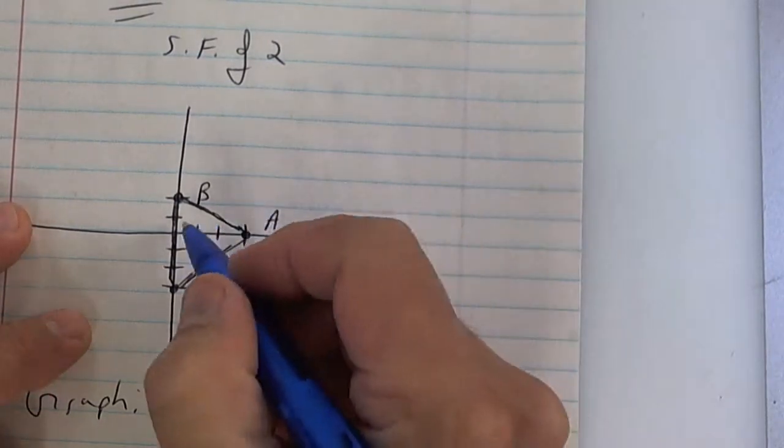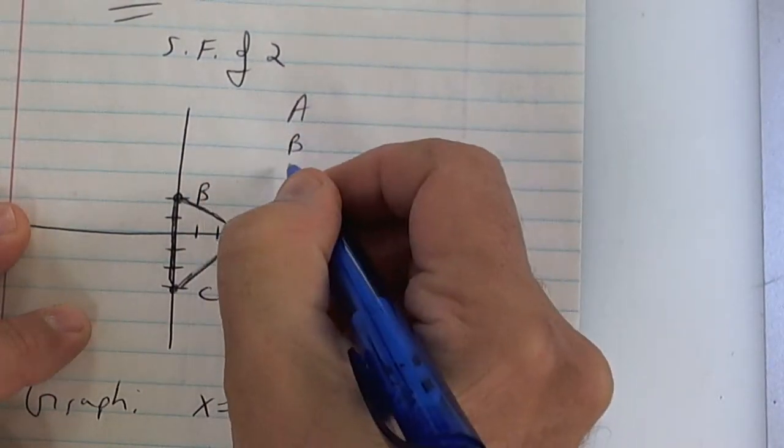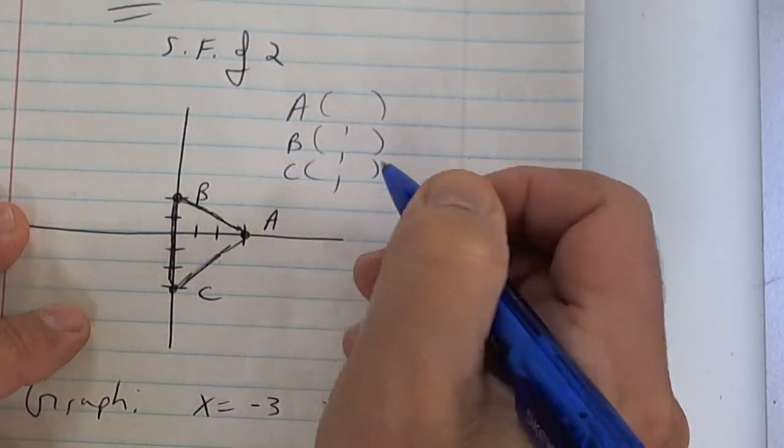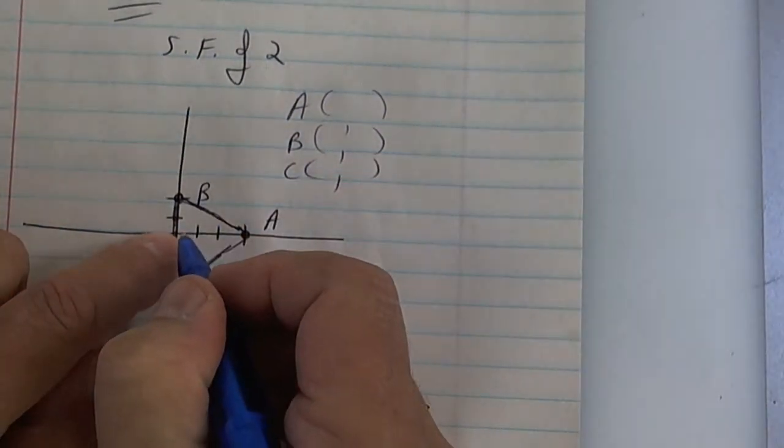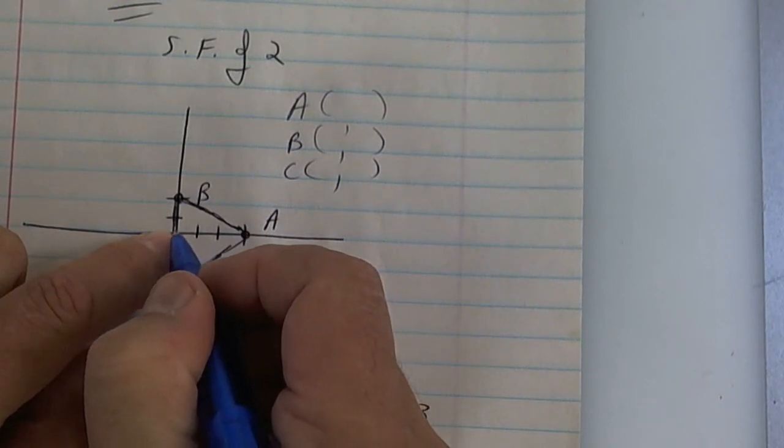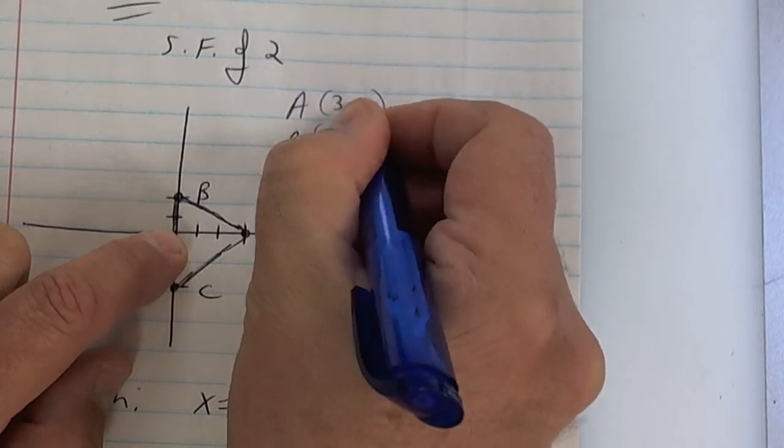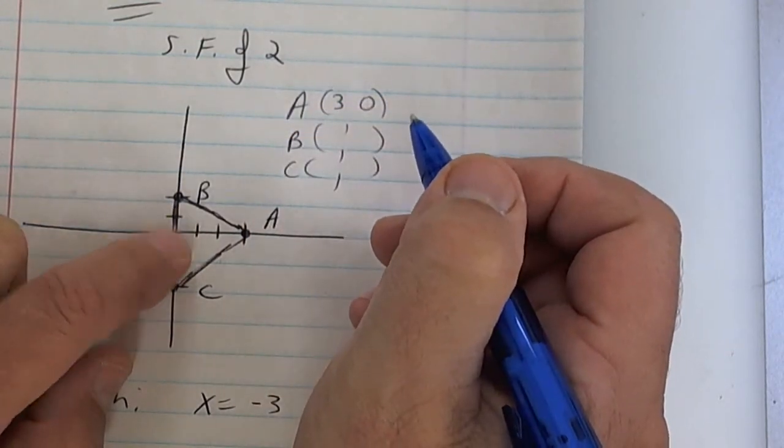This one right here you're going to multiply by a scale factor of two, but before you do that you've got to identify where all the points are. If you're still having trouble with points you need to do better than that. It's always over and up.